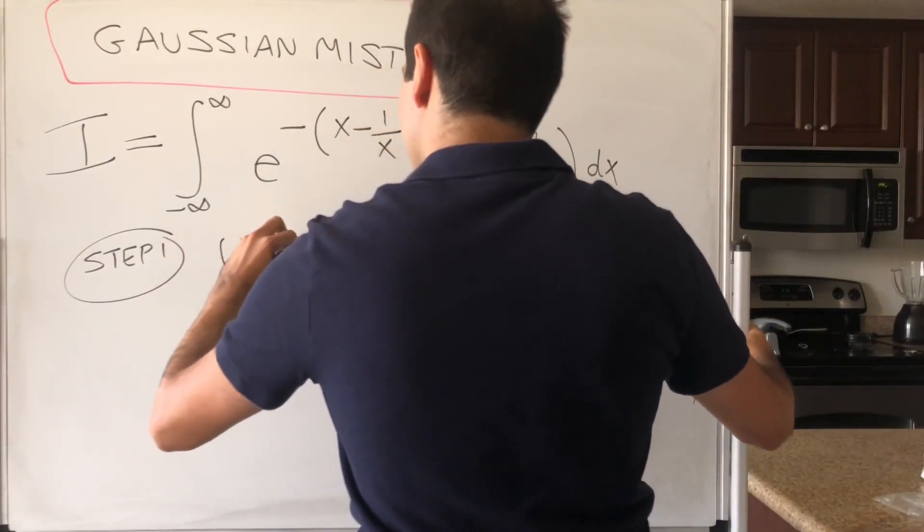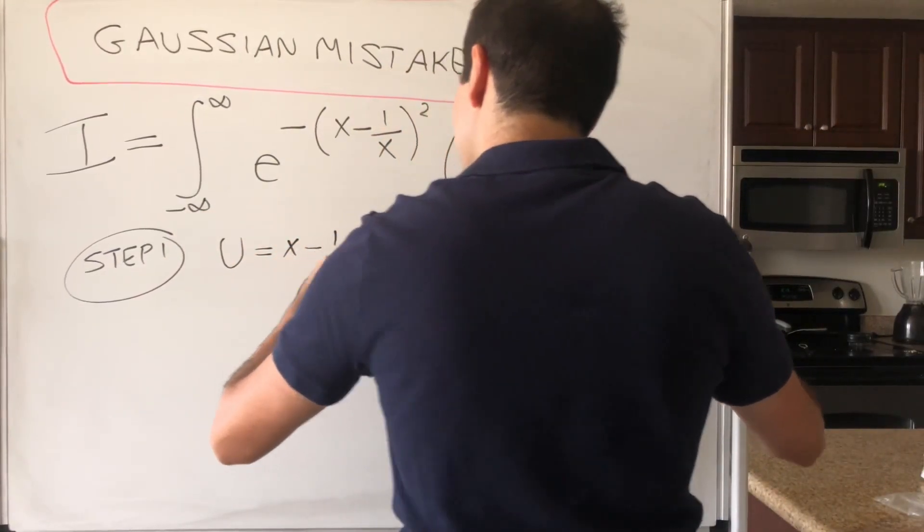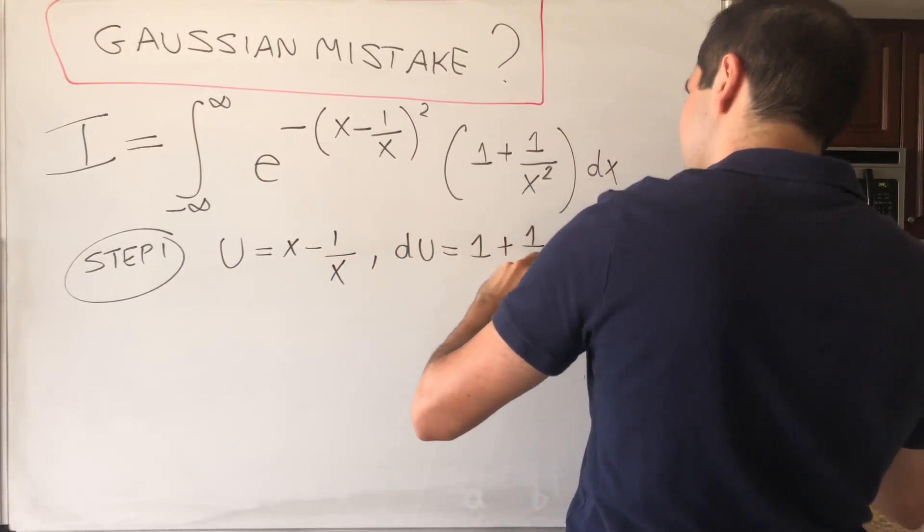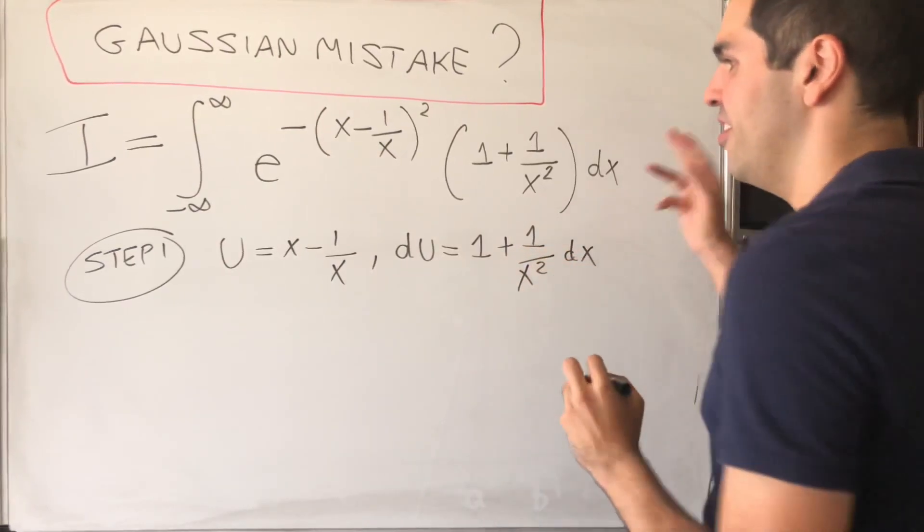Then the nice thing is du is 1 plus 1 over x squared dx. How surprising.